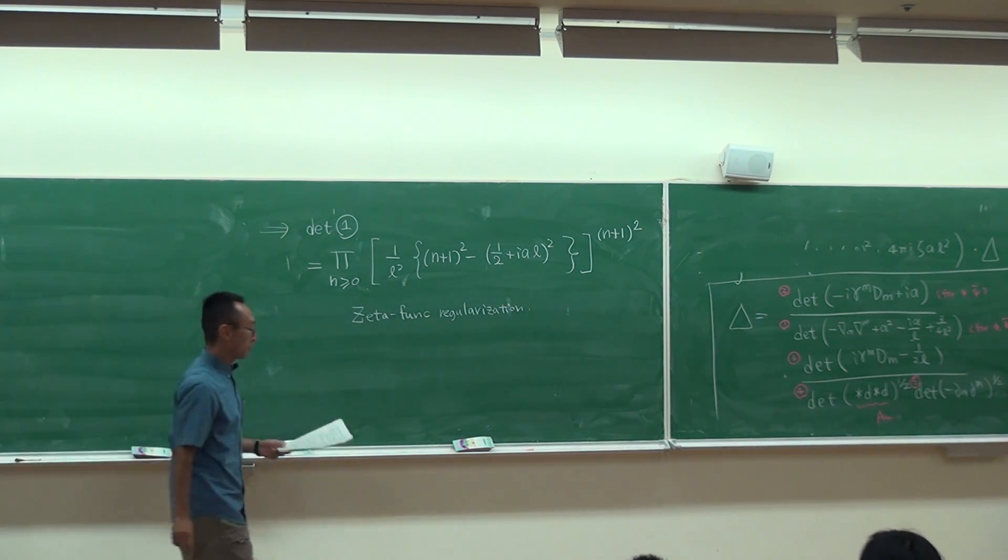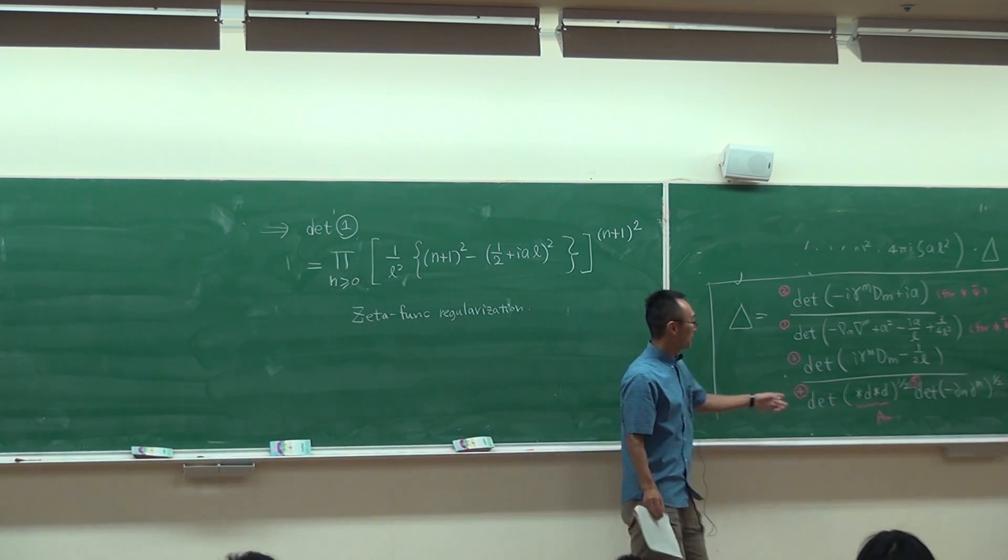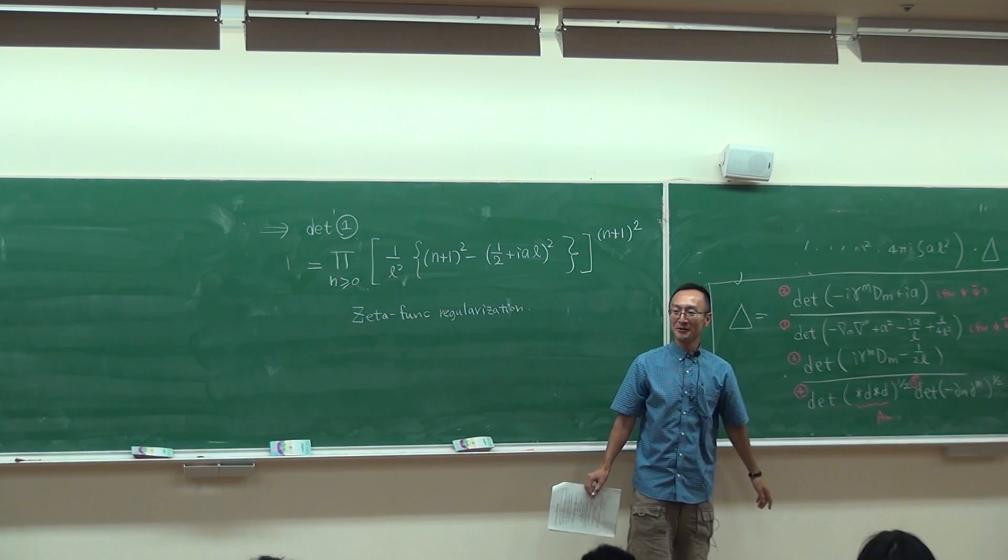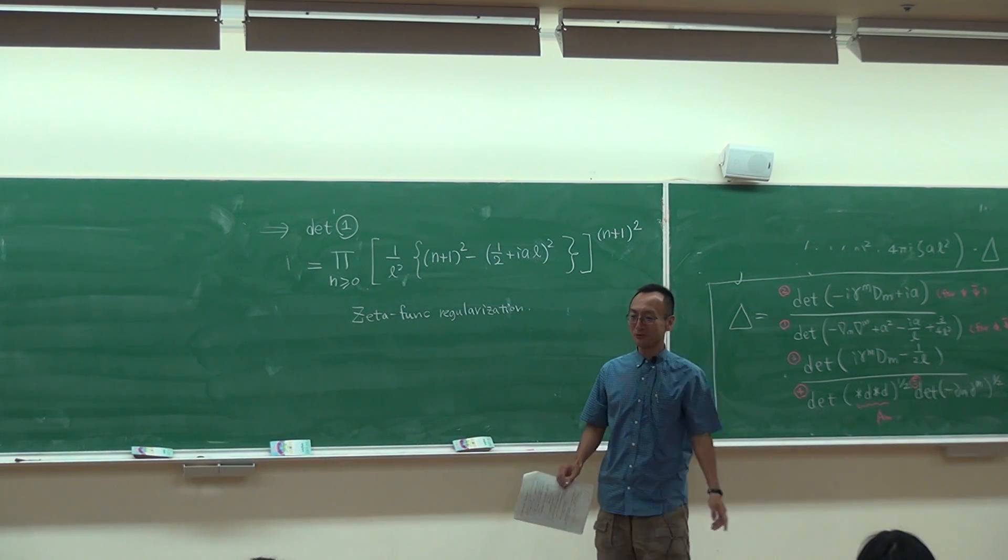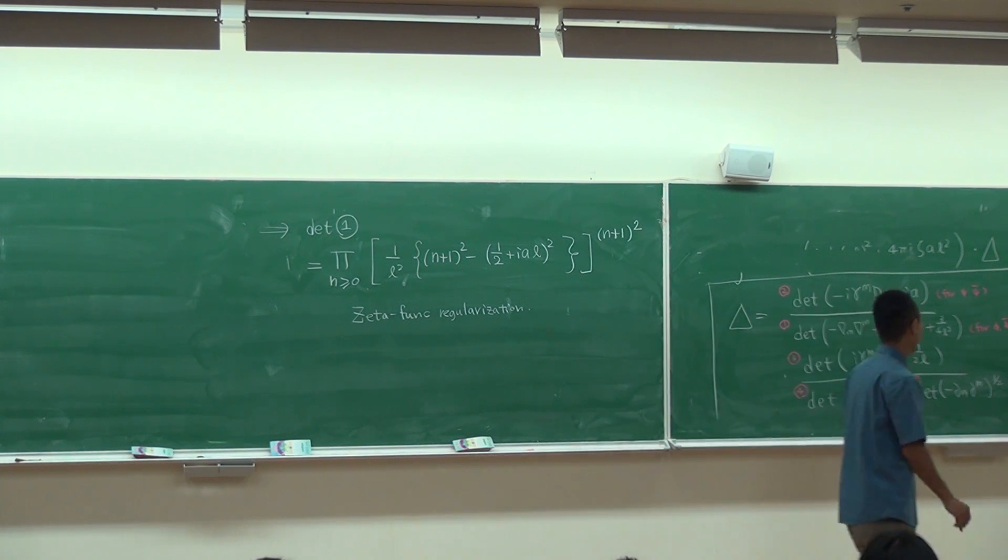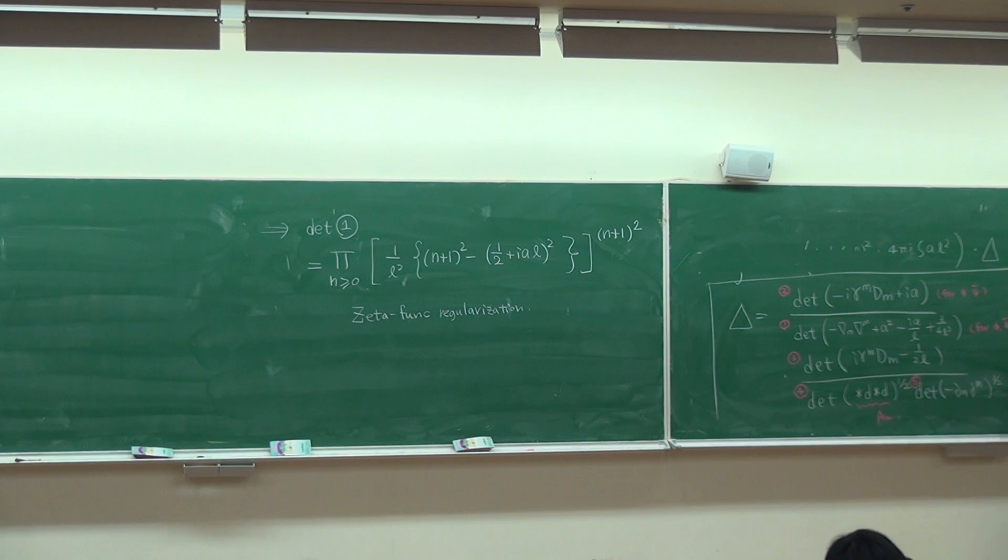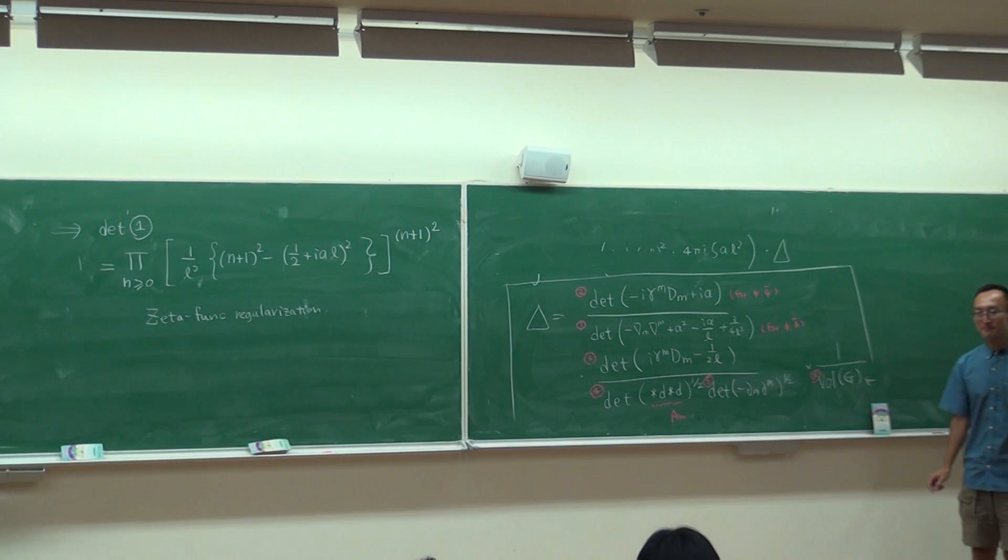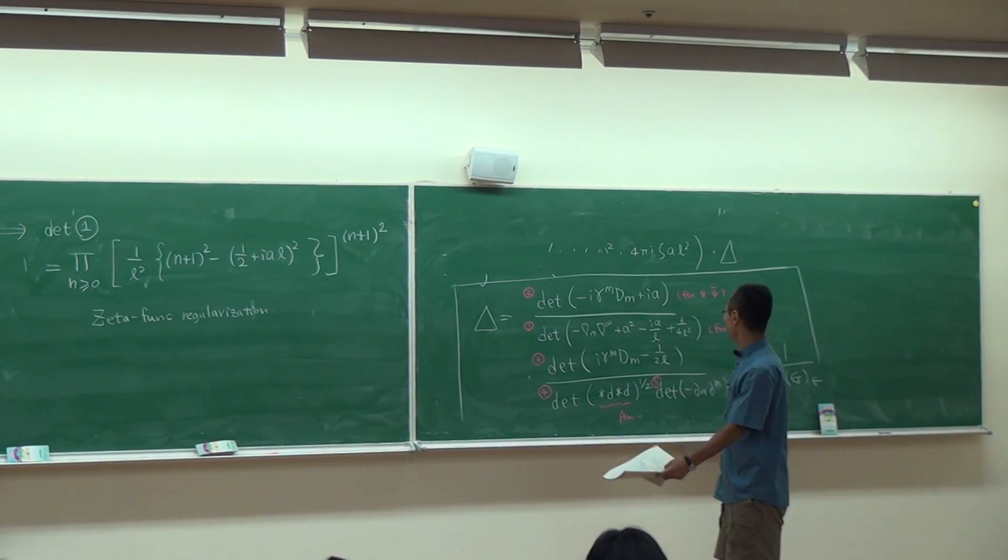In my final lecture what I would like to do is compute the rest of the determinant. But if that's the only thing I want to do, then it's just math. I would like to explain also what I mean by dividing out by the volume of the gauge group. This you always have to do whenever you think about the path integral of gauge theory.